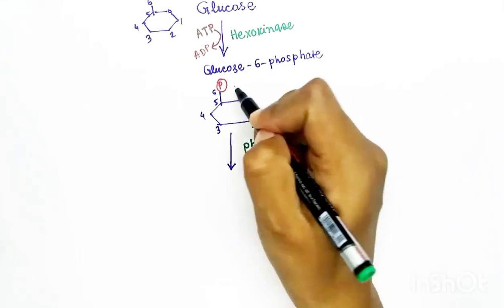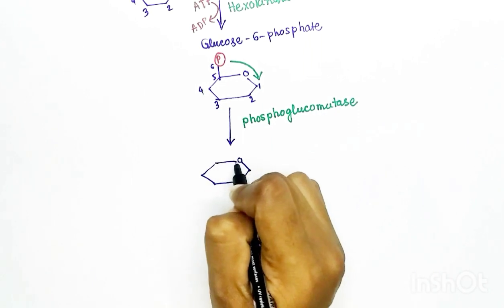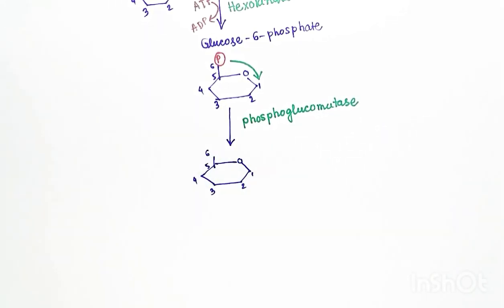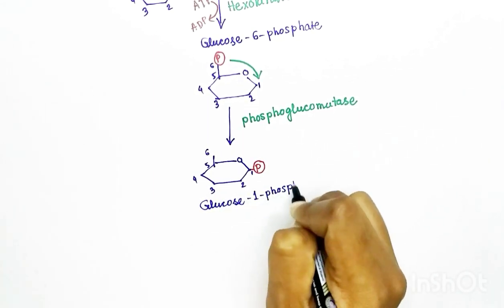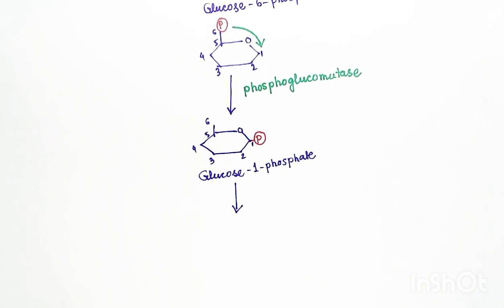In the next step, the phosphate group from the six carbon is carried out to the first carbon by the enzyme phosphoglucomutase. Now the glucose has the phosphate group in the first carbon, so it is called glucose-1-phosphate.